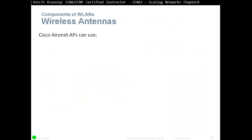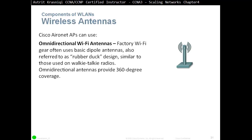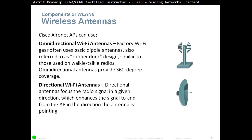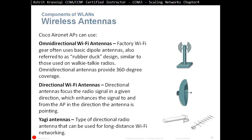Cisco Aironet APs can use omnidirectional Wi-Fi antennas — these are basic dipole antennas, also referred to as rubber duck antennas, designed similar to those used in walkie-talkie radios. Omnidirectional antennas provide 360-degree coverage. Directional Wi-Fi antennas focus the radio signal in a given direction, enhancing signal to and from the AP in the direction the antenna is pointing. Yagi antennas are a type of directional radio antenna that can be used for long-distance Wi-Fi networking.